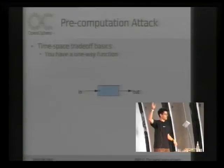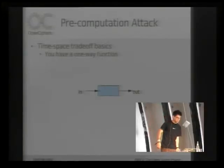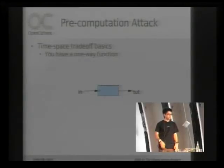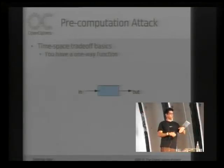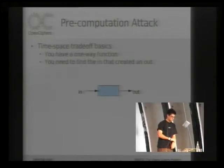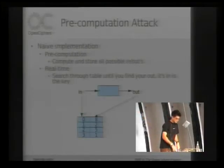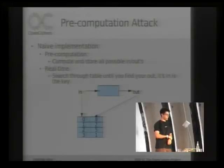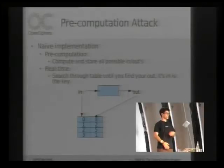Can I see a show of hands of who knows how rainbow tables work? The really basic time-space trade-off is you have a one-way function where you just have an input into a function, you get an output, and they try to make it so you can't go the other way. You need to find basically the input that created the output that you have. The naive implementation is you go through, try every possible input, create a huge table, and search through all the outputs to find the one that matches.